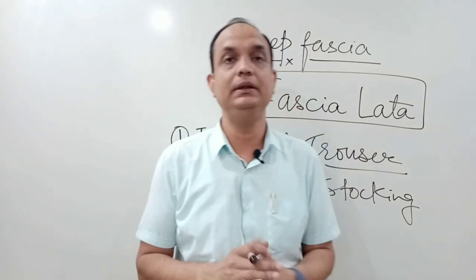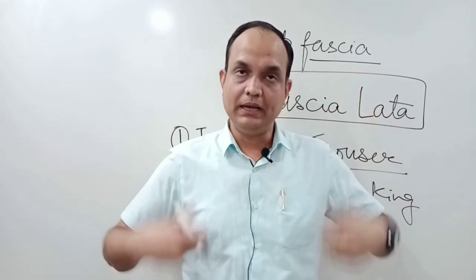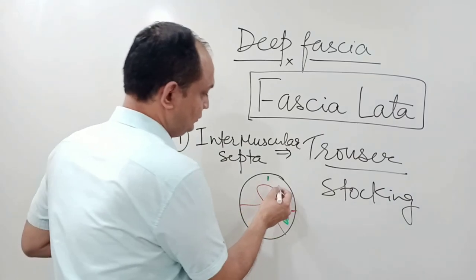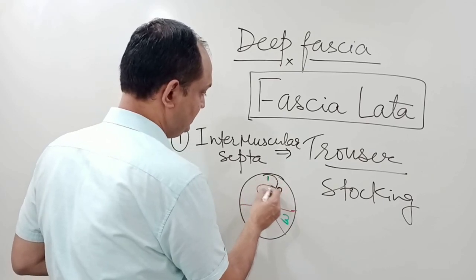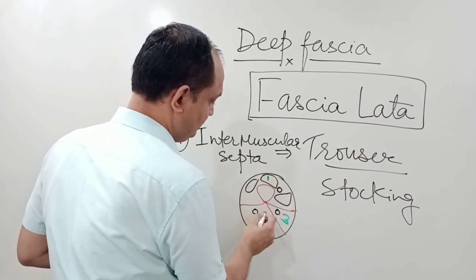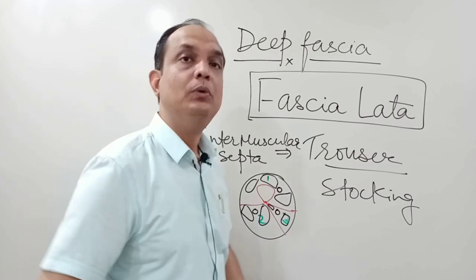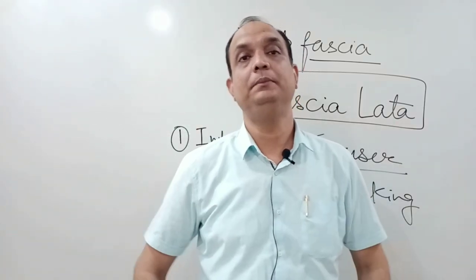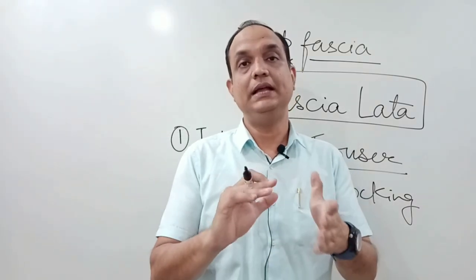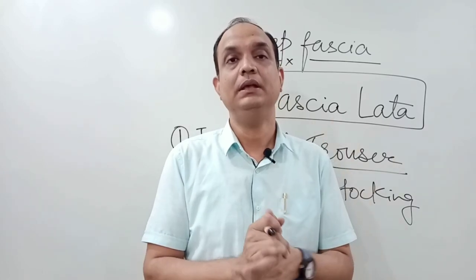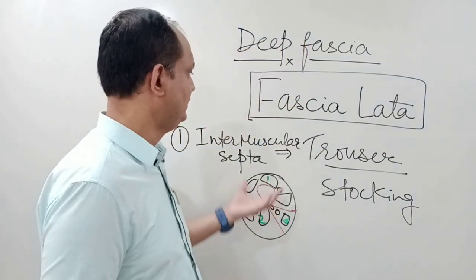The deep veins of the lower limb have to push the blood against gravity. So the deep fascia of the thigh is helpful in venous return against gravity.